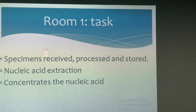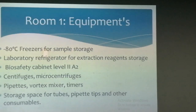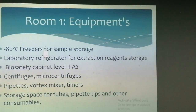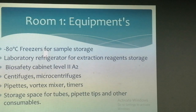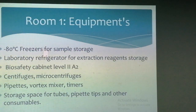The extraction can be manual, semi-automated, or automated. These are the list of equipments which should be placed in room one: a minus 80 degree fridge is required for sample storage, a laboratory refrigerator for storage of reagents, and a biosafety cabinet level 2 is required for the processing and extraction of samples, as all specimens are considered infectious. Along with that, centrifuge, pipette, vortex, and consumables should be available in this room. And in this room there should be negative pressure.